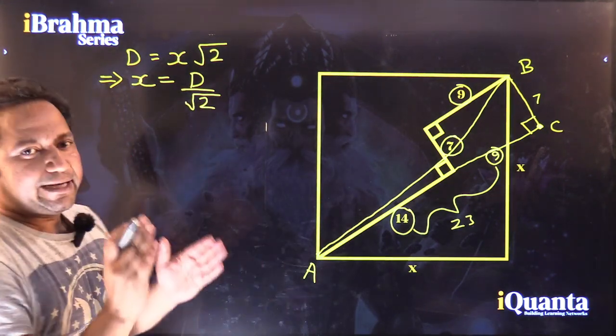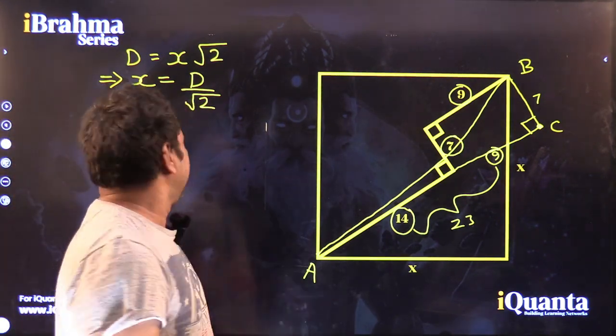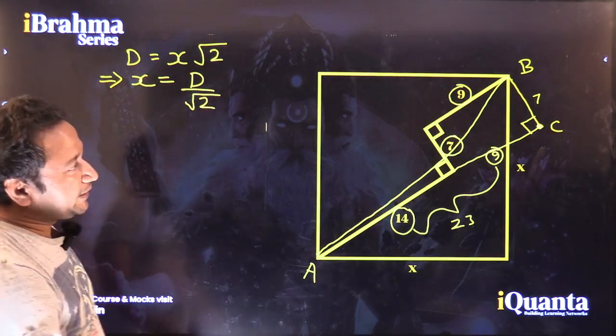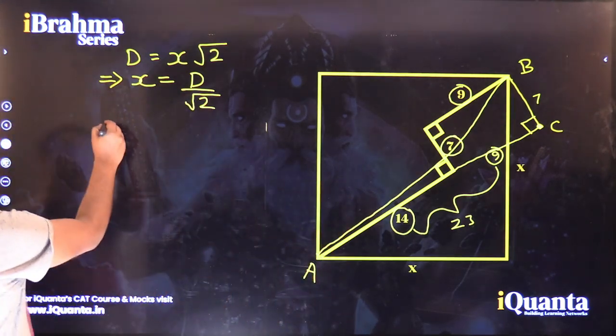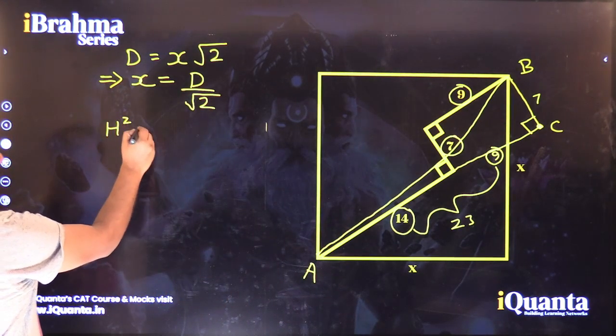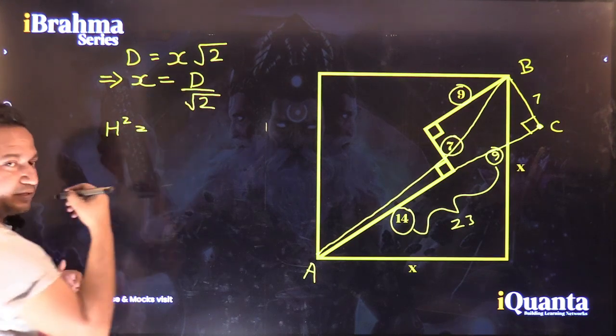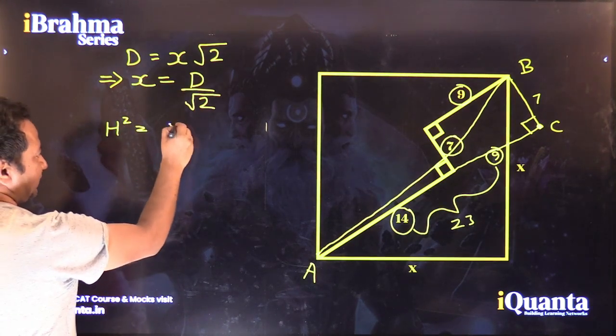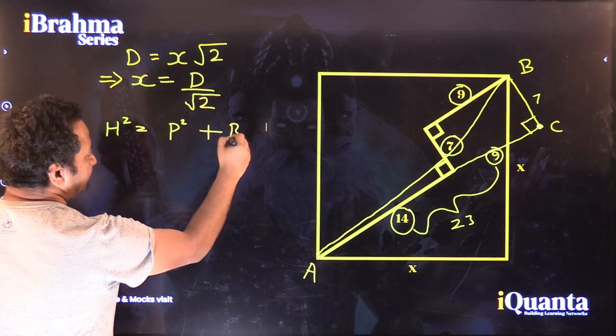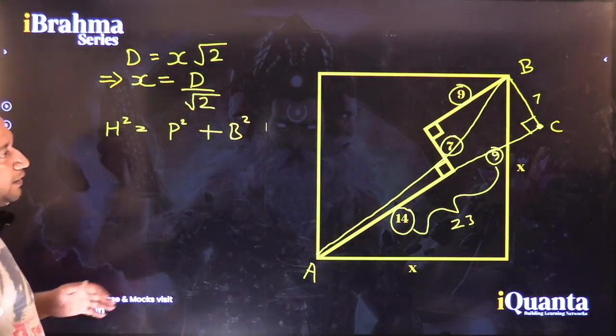In any right-angled triangle, Pythagoras theorem can be applied. And Pythagoras theorem says that the square of hypotenuse is equal to sum of the squares of perpendicular and base. Here,